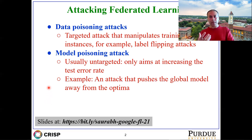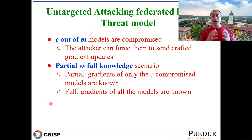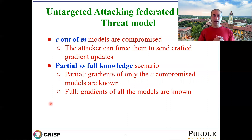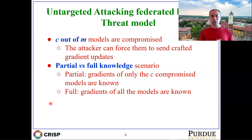The model poisoning attack pushes the global model away from the global optimum. The threat model we consider is that up to C out of M models can be compromised — this is considered the most damaging attack to federated learning training with compromised clients as of now. The attacker can force clients to send crafted gradient updates to the central server. Clients can collude in arbitrary ways and have knowledge of the aggregation scheme employed at the server.